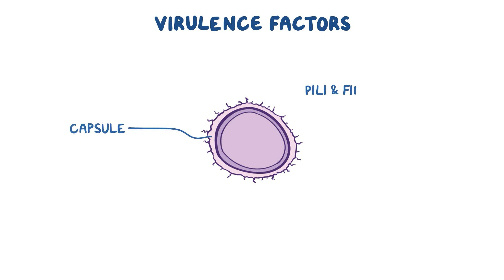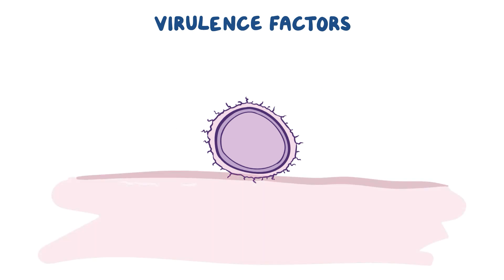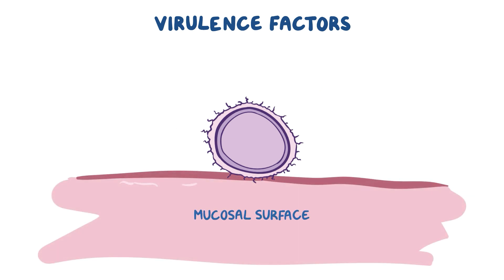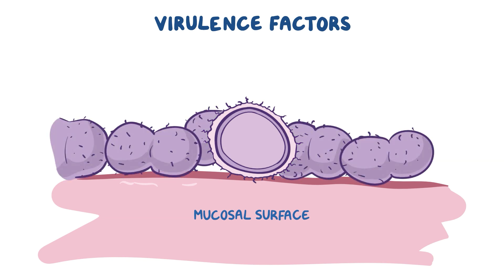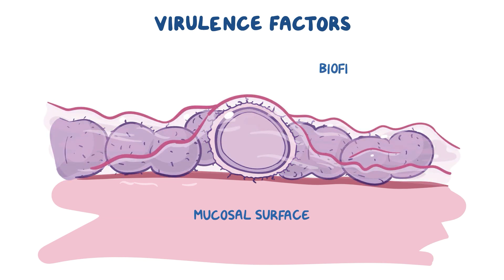The capsule has pili and fimbriae, which are hair-like extensions that help it attach to the host cell. Once attached to a mucosal surface, like in the nasopharynx or the middle ear, strep pneumoniae can multiply and produce biofilms.